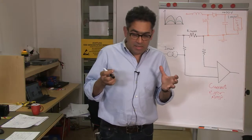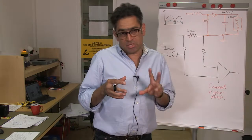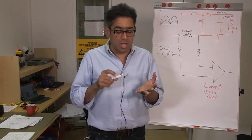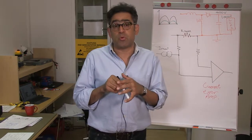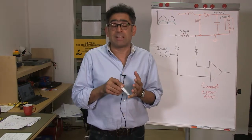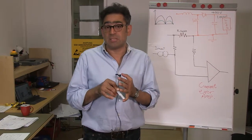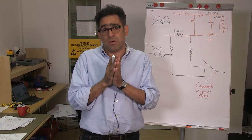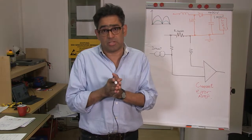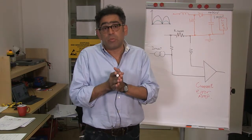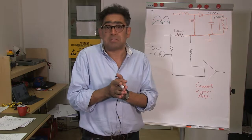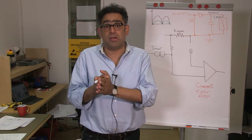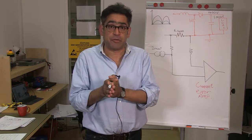Your PFC power stage has got two loops: a voltage loop and a current loop. The voltage loop is quite slow and is relatively easy to measure. The current loop, on the other hand, is actually quite difficult to measure. The current loop is quite fast — anything between, let's say, 5 to 10 kHz crossover frequency.